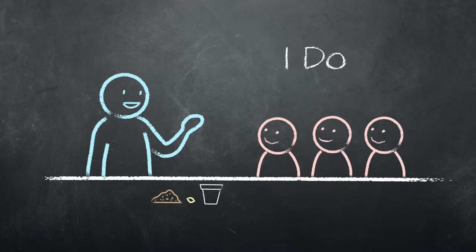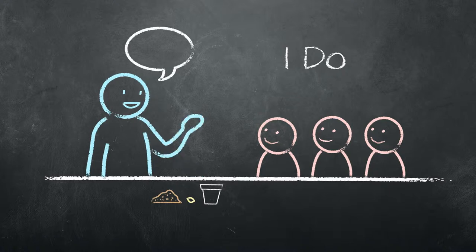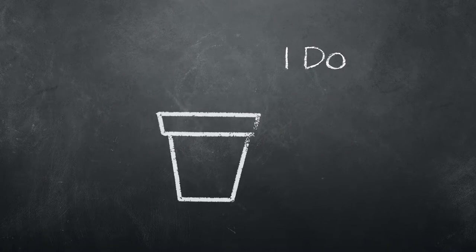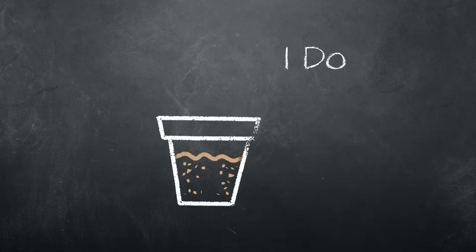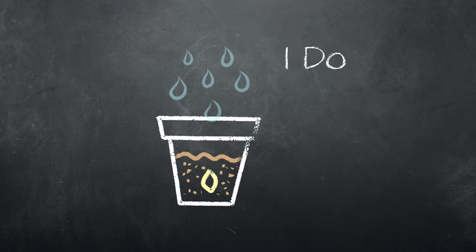For the I do section, the teacher demonstrates and explains how to plant a seed in a cup. The teacher takes a small cup and fills it with soil, plants a seed in it, and then waters it.